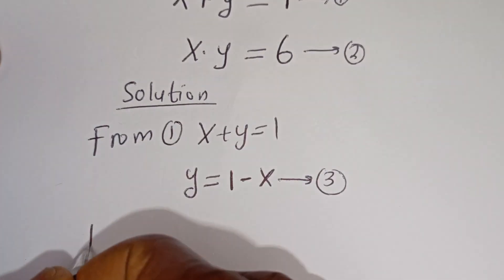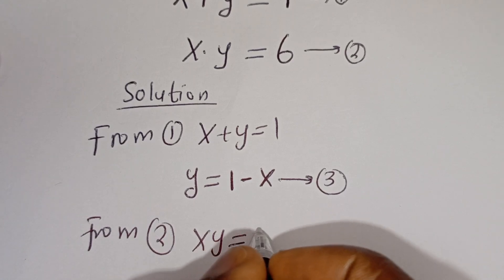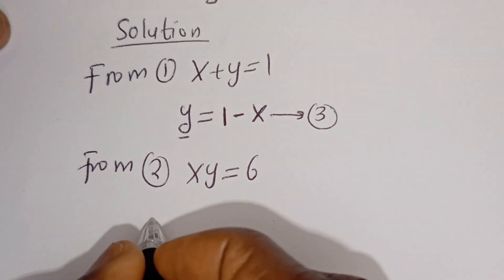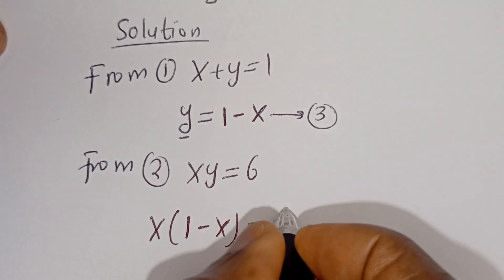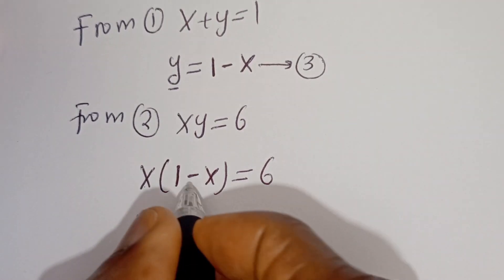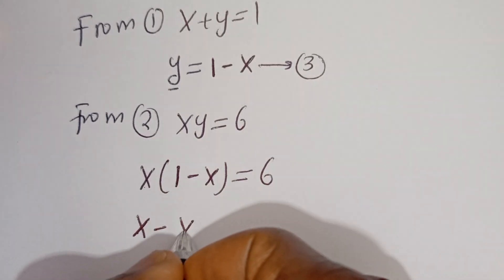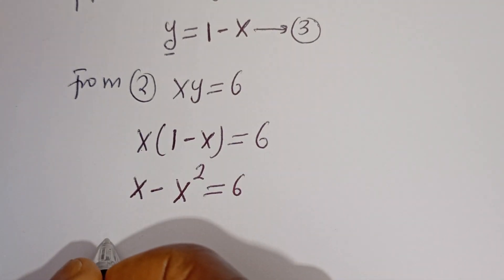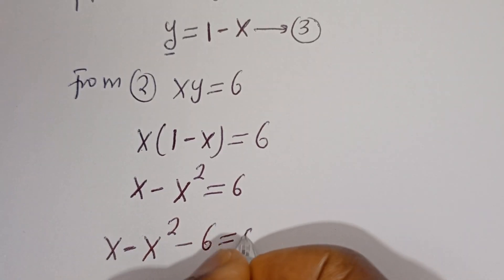Also, from equation 2, xy is equal to 6. We can now substitute for y. We have x bracket 1 minus x is equal to 6. Let's open the bracket: 1 times x is x, minus x times x is x squared, so x minus x squared is equal to 6. Then we have x minus x squared minus 6 is equal to 0.